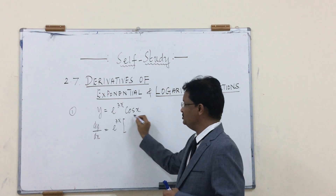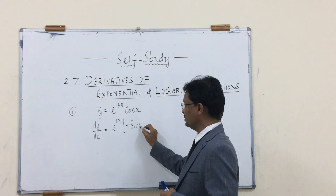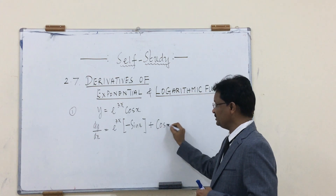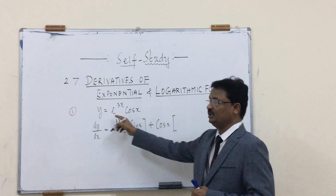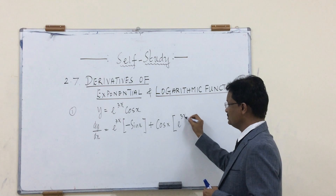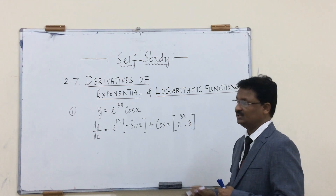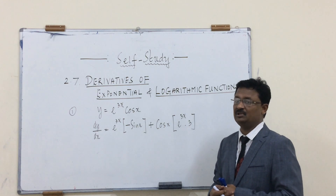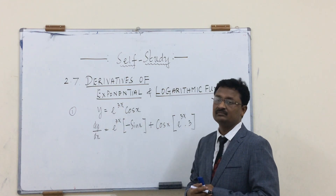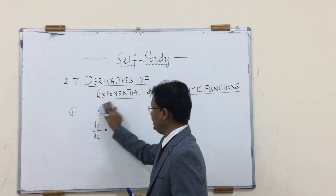Applying the product rule: e^(3x) times the differentiation of cos(x), which is −sin(x), plus cos(x) times the differentiation of e^(3x). The differentiation of e^(3x) is e^(3x) times 3, since the differentiation of 3x is 3. This is the first derivative of e^(3x) · cos(x).